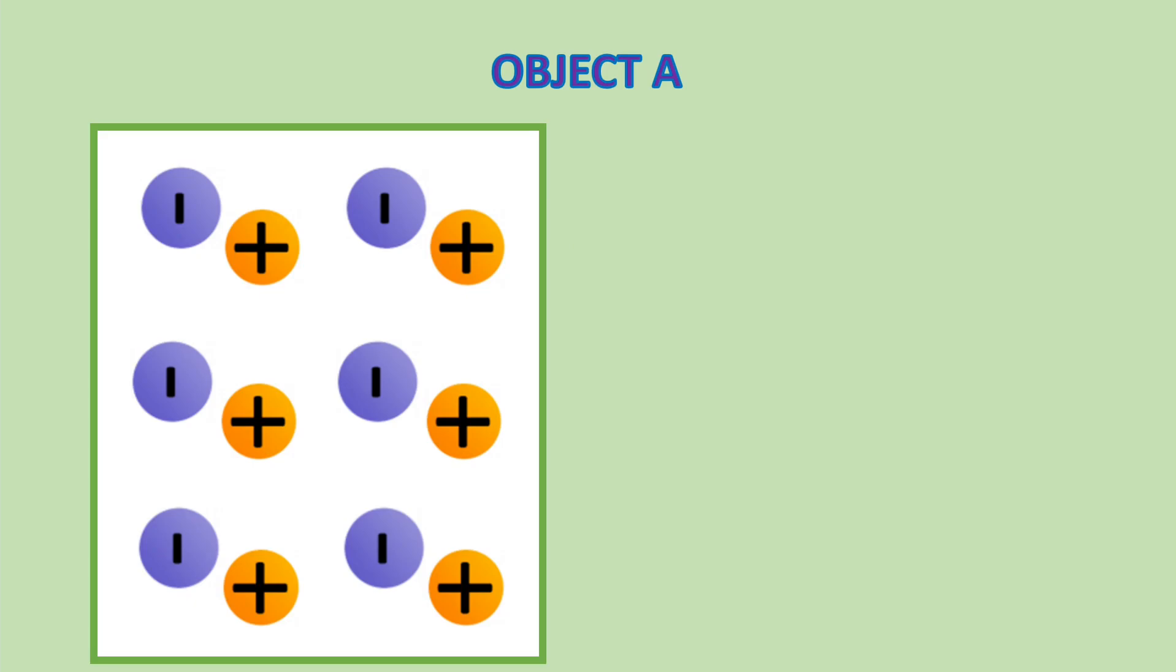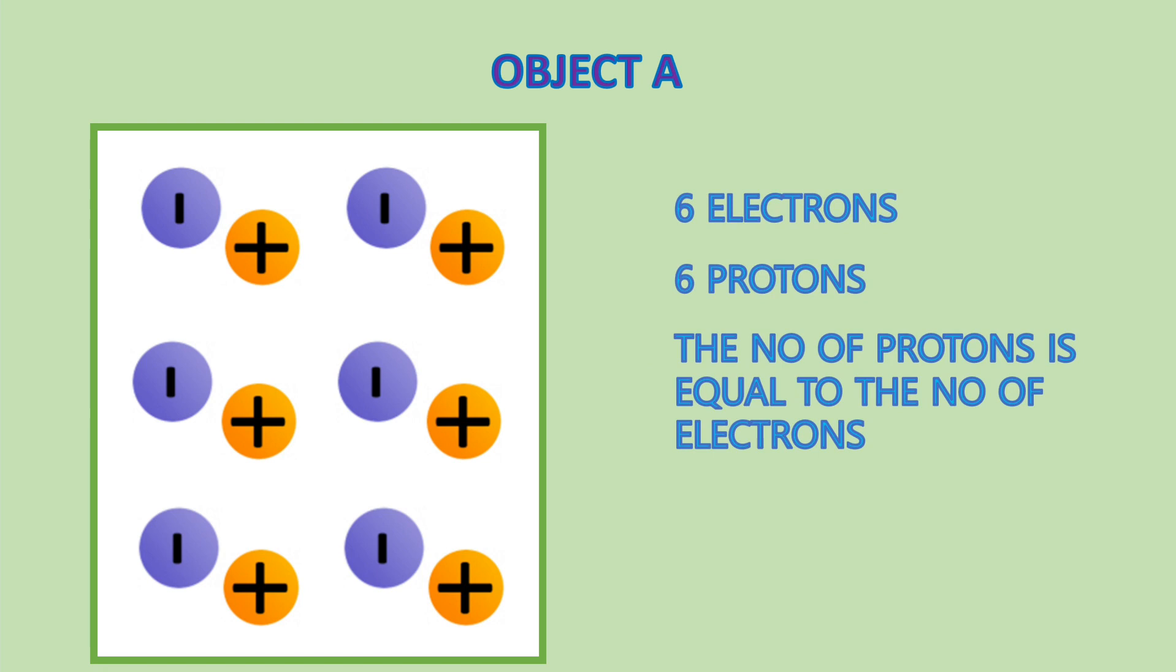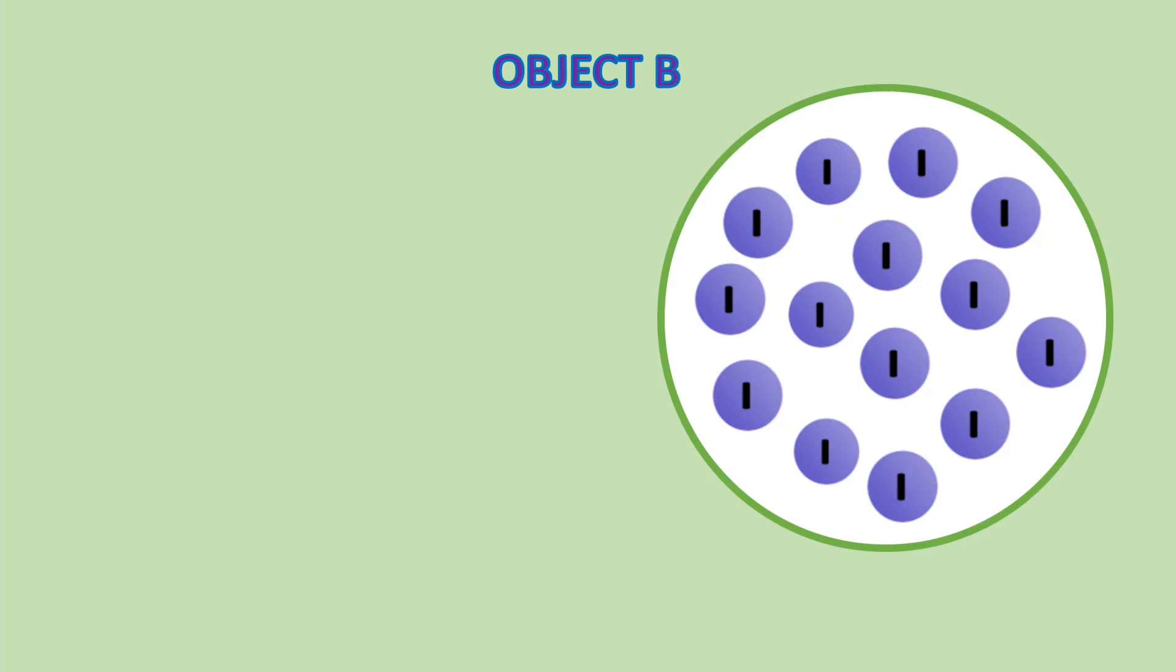Object A has six electrons and six protons. We notice the number of protons is equal to the number of electrons. We can therefore describe this object as being neutral. If you look at object B, it is negatively charged.